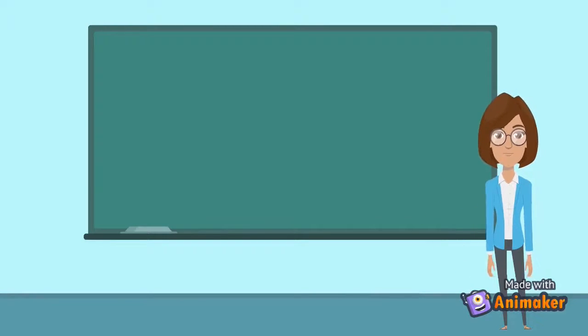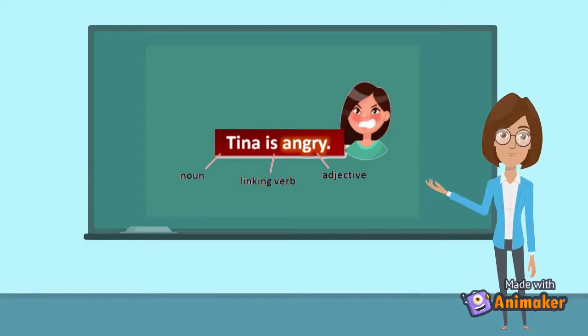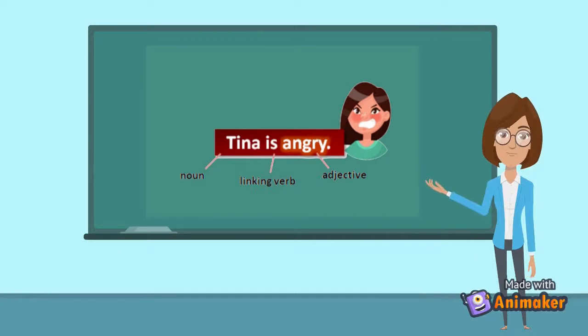Second, adjective as a predicative adjective. Adjectives go after the noun and complete a linking verb. In this sentence, Tina is a subject, is a linking verb, and angry is the adjective word.